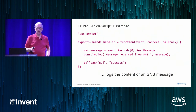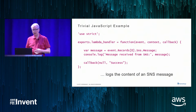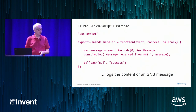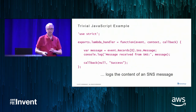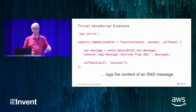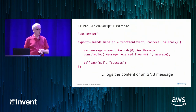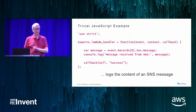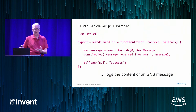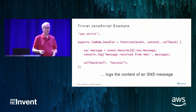This is a trivial JavaScript example of a Lambda — it receives an SNS message and logs the content to CloudWatch. This is a terrible use of Lambdas, but it illustrates how simple they are to write. You don't have to know anything about SNS. The key cost consideration: you pay in increments of 100 milliseconds. This Lambda executes in about two milliseconds, so if you're running 100 of these a second, you're paying for a lot of CPU time you don't need.